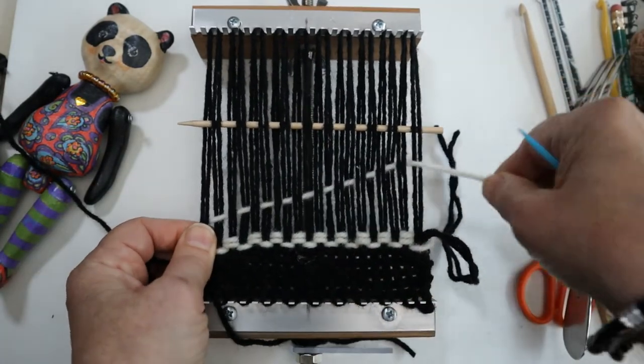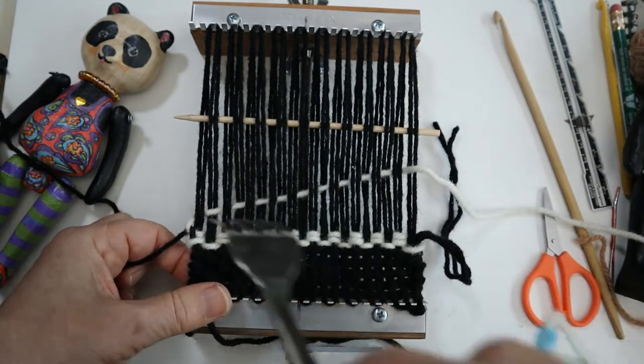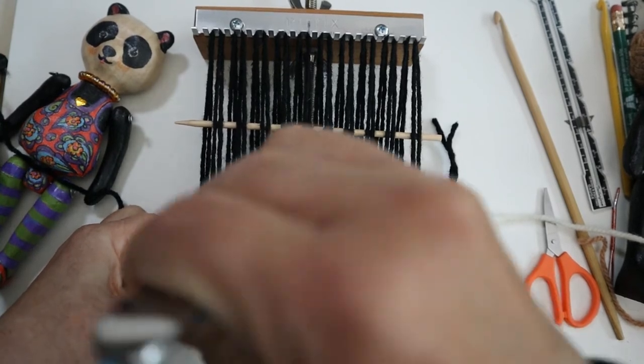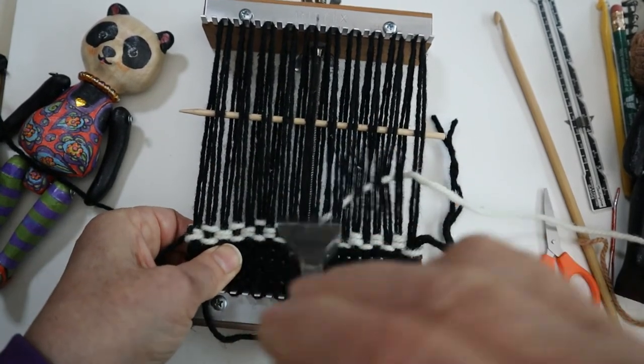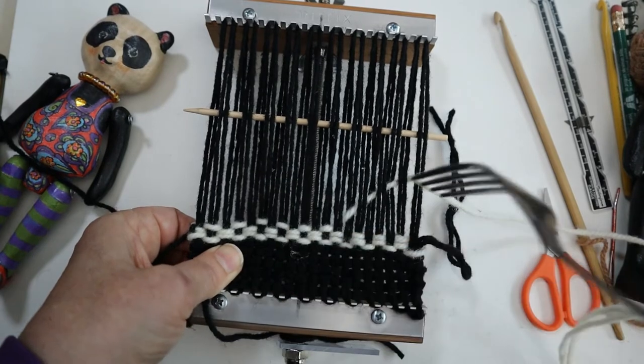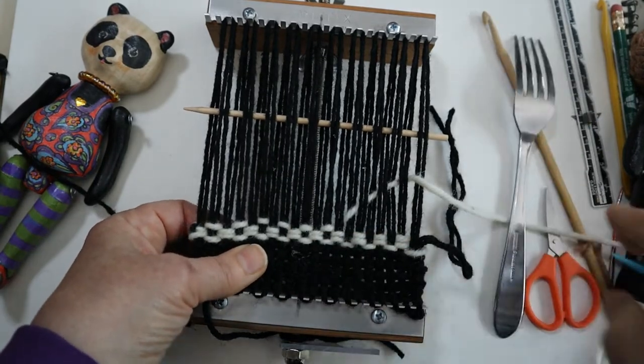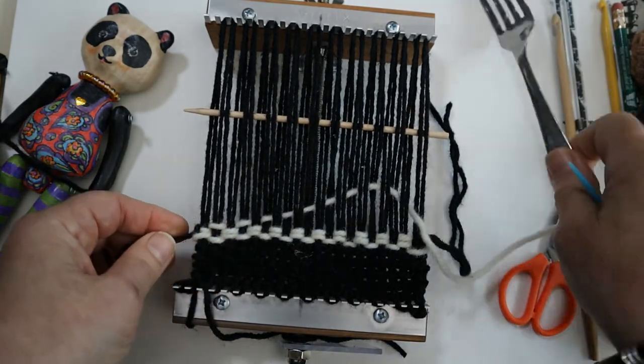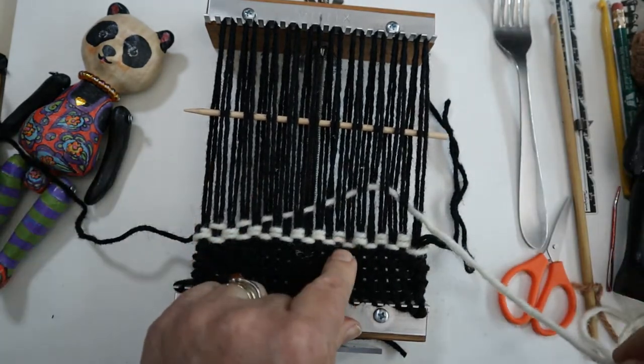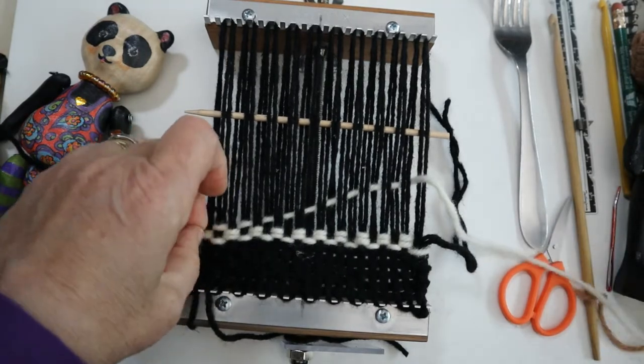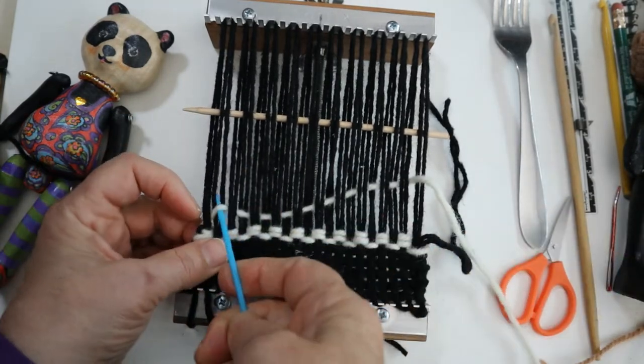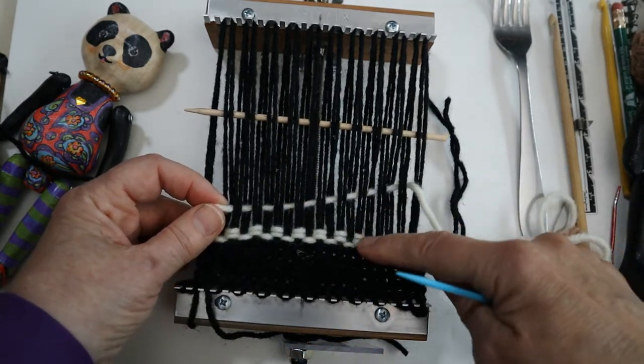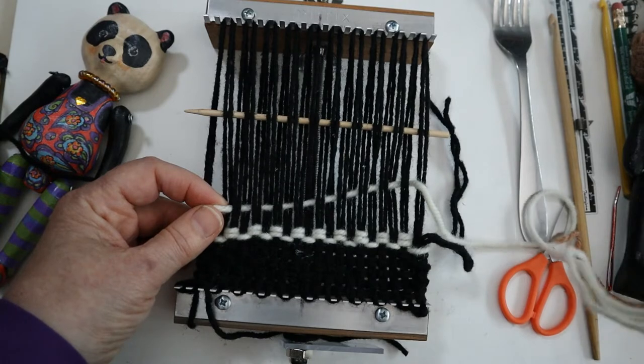I want this angled up so that I can beat it in. Wait a minute, I did two rows the same. I need to go and correct that. So I'm going to stop, pull this out, and weave this one correctly, and then I'll be right back to you.